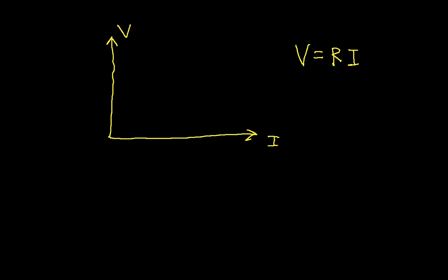So what this means is that the relationship between current and voltage of a resistor can be drawn with a straight line graph. And the slope of this line is the resistance R.